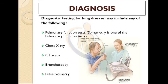Now the important part is diagnosis. How to diagnose RLD? The diagnostic testing for lung diseases may include: pulmonary function test — spirometry is one of the pulmonary function tests — followed by chest X-rays, CT scans, bronchoscopy, pulse oximetry, etc. Here we can see a patient doing spirometry for the pulmonary function test.